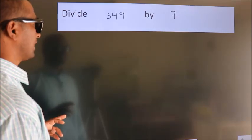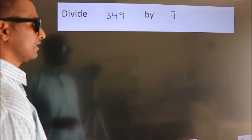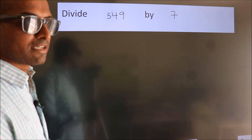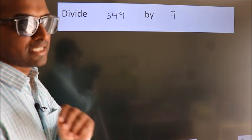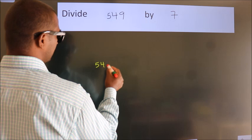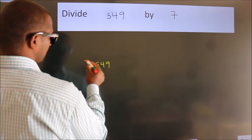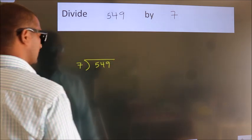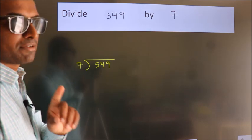Divide 549 by 7. To do this division, we should frame it in this way: 549 here, 7 here. This is your step 1.